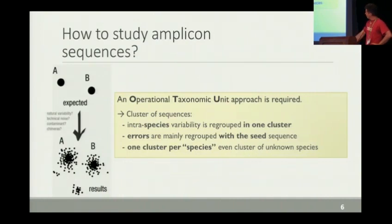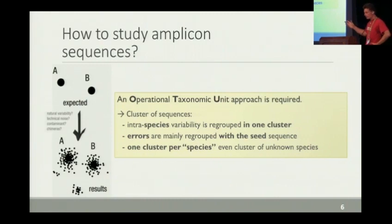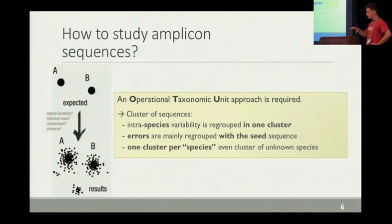When you study amplicon sequences, the idea is that you are searching for species — searching for something like A and B — but in fact, due to a lot of different variability, technical variability and biological variability, you will have something more than expected, with clouds of sequences, and this is the beginning of problems. To work on it, we have to have an operational taxonomic unit approach where you need to cluster the sequences and regroup intraspecific species variability into one cluster, and after you will succeed in having one cluster per species.